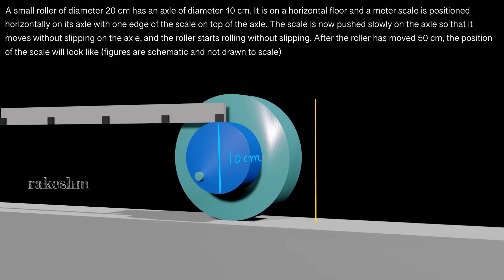A small roller of diameter 20 centimeters has an axle of diameter 10 centimeters. This roller is on a horizontal floor and a meter scale is positioned horizontally on its axle with one edge of the scale on top of the axle. The scale is now pushed slowly on the axle so that it moves without slipping on the axle, and the roller starts rolling without slipping.